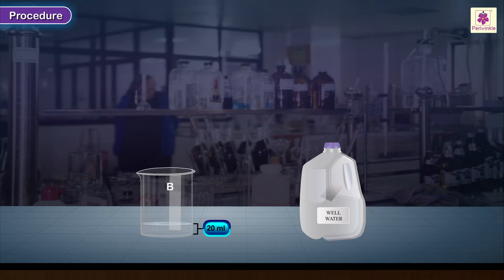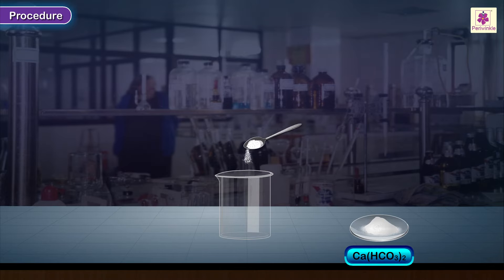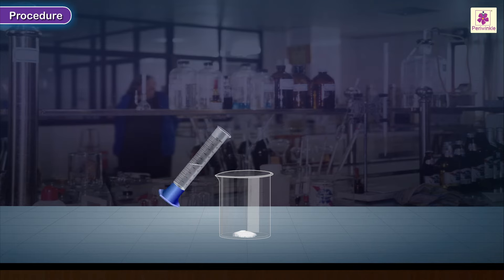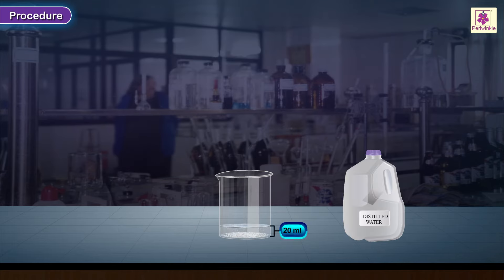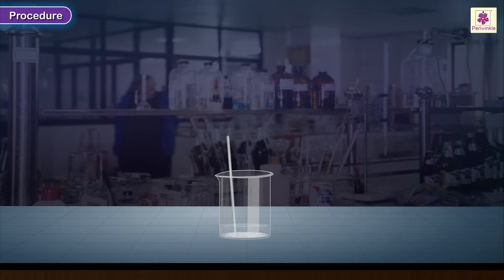Prepare a 10% calcium hydrogen carbonate solution as follows: Take 2 grams of calcium hydrogen carbonate in a beaker. Add 20 ml of distilled water to it. Stir till it dissolves. Label the beaker as C.